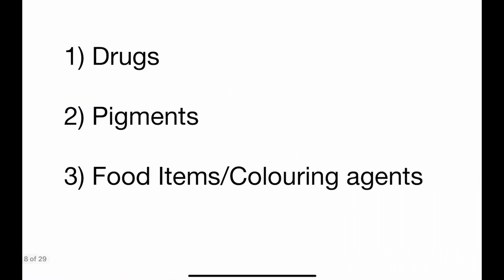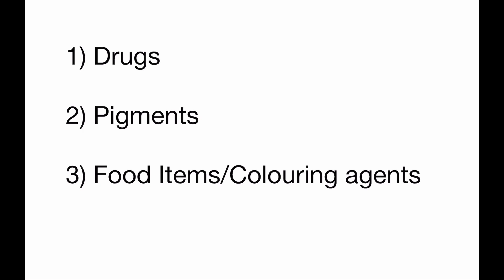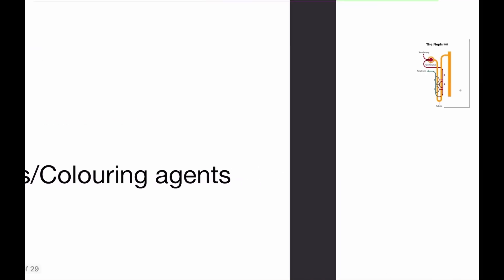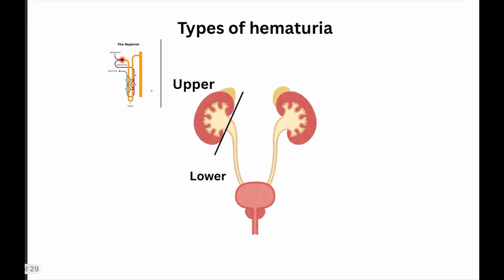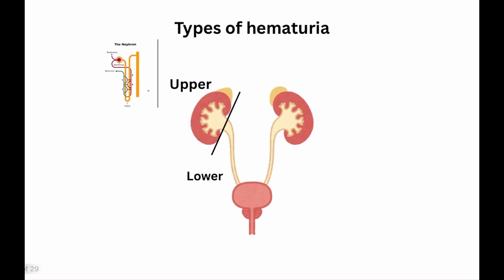Apart from that, urine can appear red or dark brown because of drugs, pigments, food items, or coloring agents. Up until now we've discussed the types of hematuria based on appearance. Now let's discuss the types of hematuria based on the origin of the bleed.